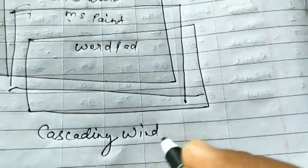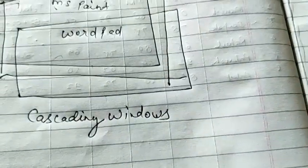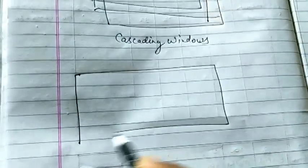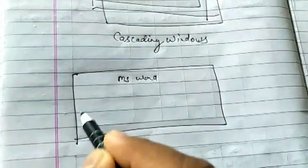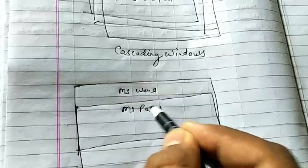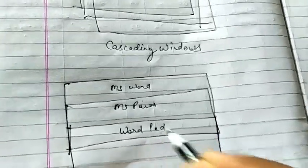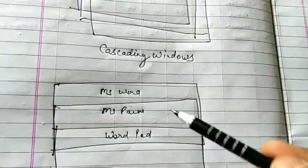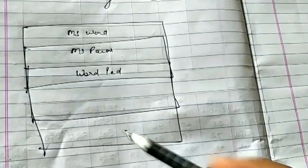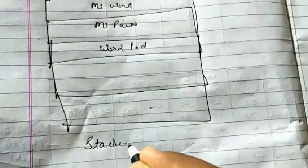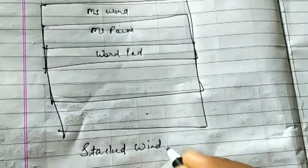Now understand what stacked windows arrangement is. Suppose you have two or three files open — MS Word, MS Paint, and WordPad. In stacked arrangement, the windows are arranged one on top of the other horizontally. This order is called stacked windows arrangement.